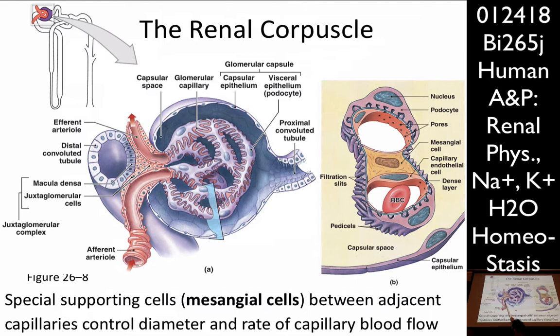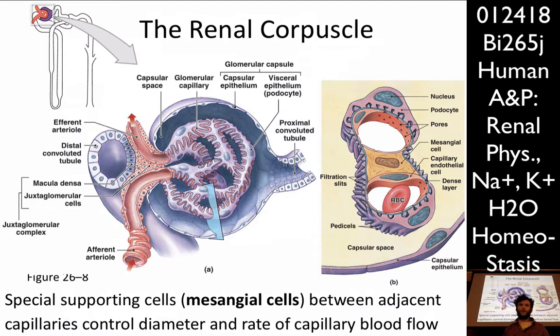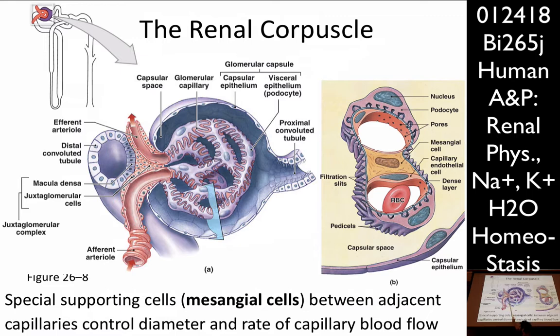The last thing to point out is the juxtaglomerular complex, made of two parts: the macula densa — a thicker, denser patch of cells in the distal convoluted tubule that has wrapped itself up and inserted itself between the afferent and efferent arterioles — and the juxtaglomerular cells. The juxtaglomerular complex can be considered endocrine tissue. Note there are two 'juxta' terms: the juxtamedullary nephron is a nephron juxtaposed to the medulla, and juxtaglomerular cells are juxtaposed to the glomerulus.